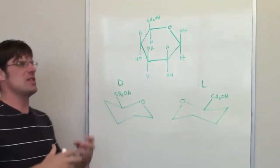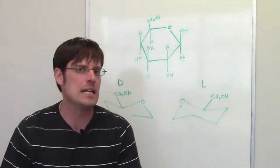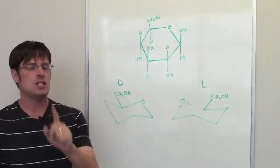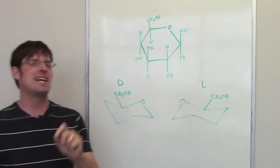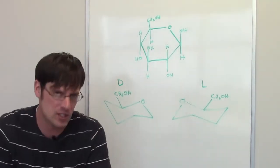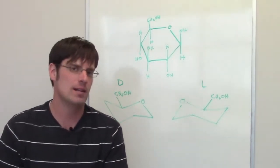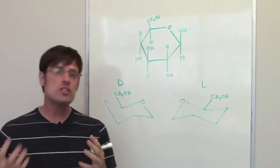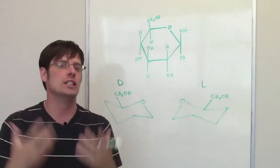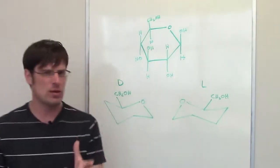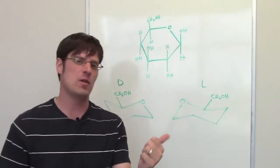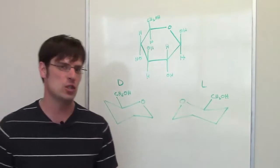Now D is the natural form of glucose and L is the unnatural form. Why in the world is glucose the most prevalent monosaccharide in nature? The reason is because it is the only monosaccharide that has the ability to place all of its substituents in the equatorial position.